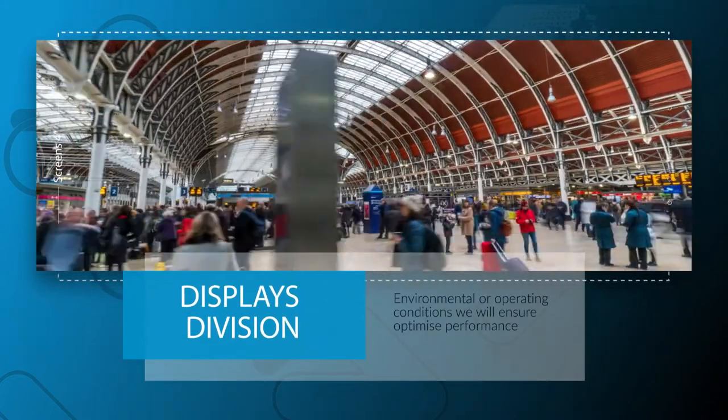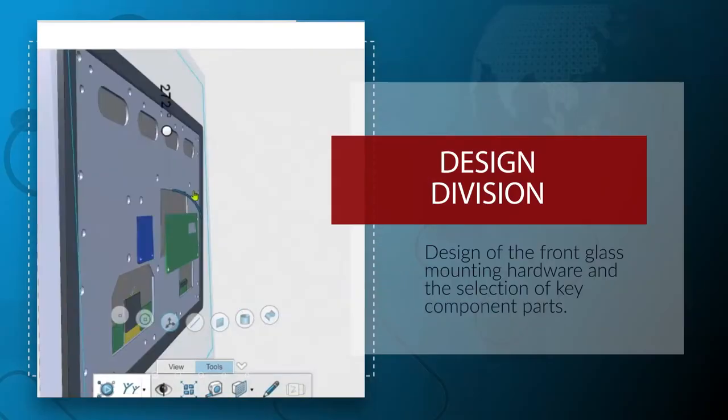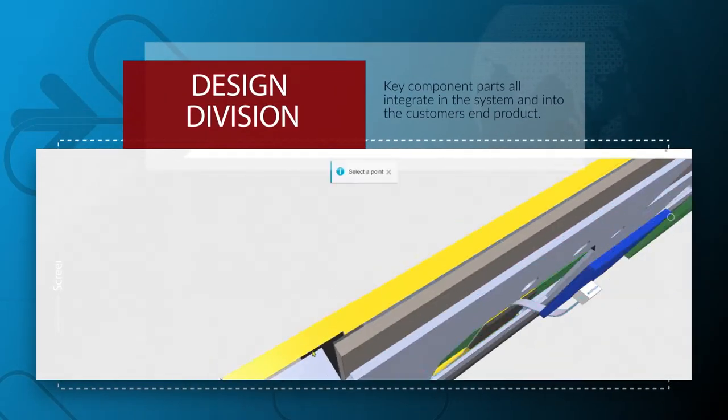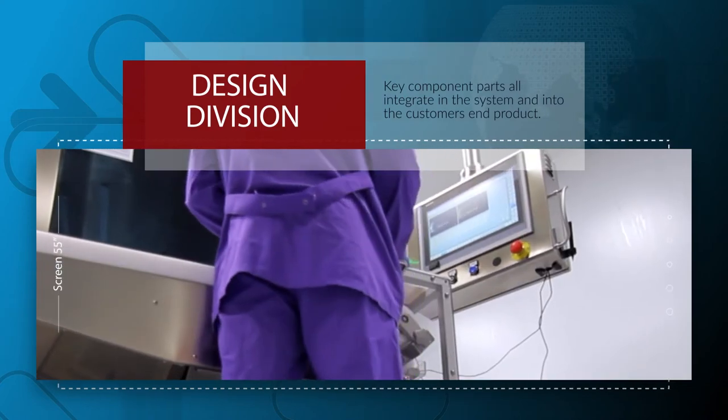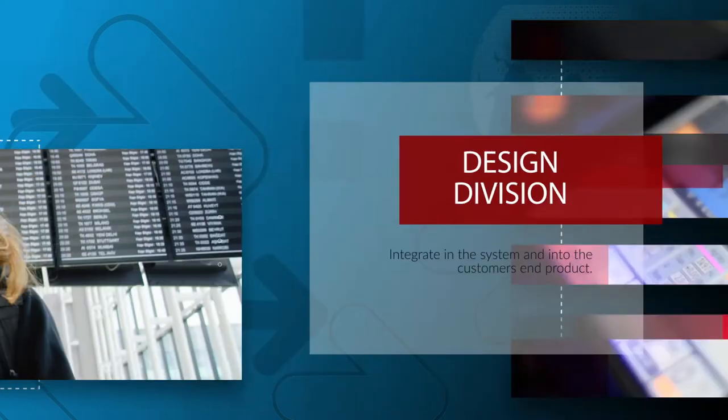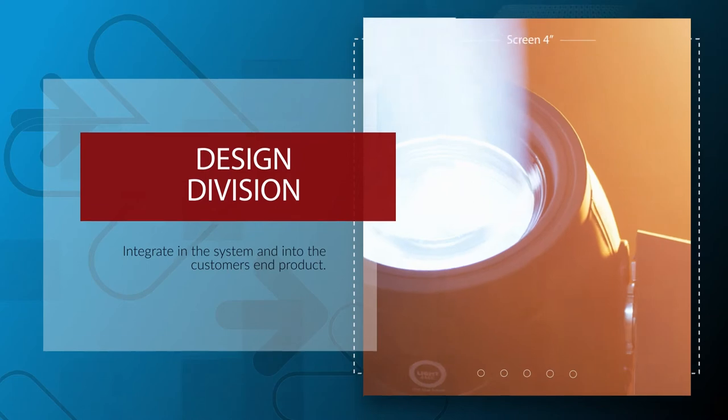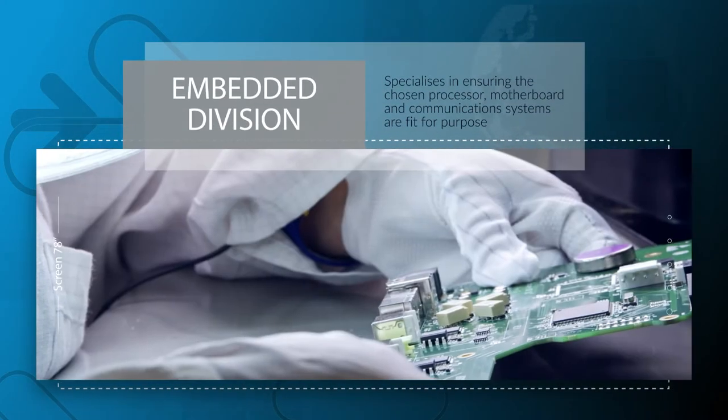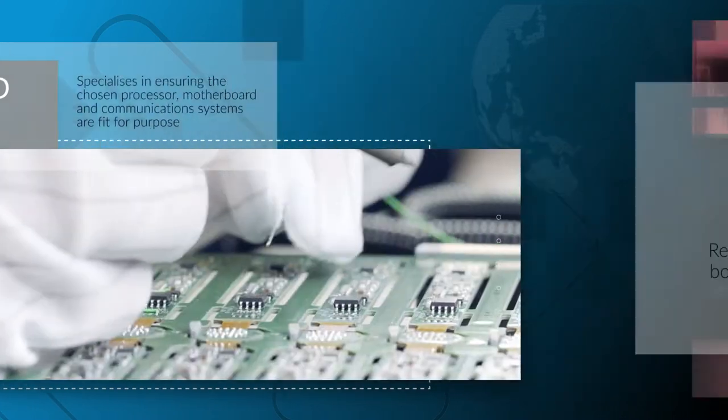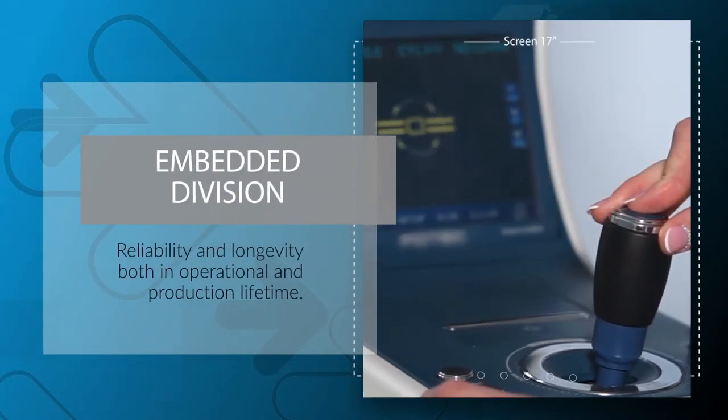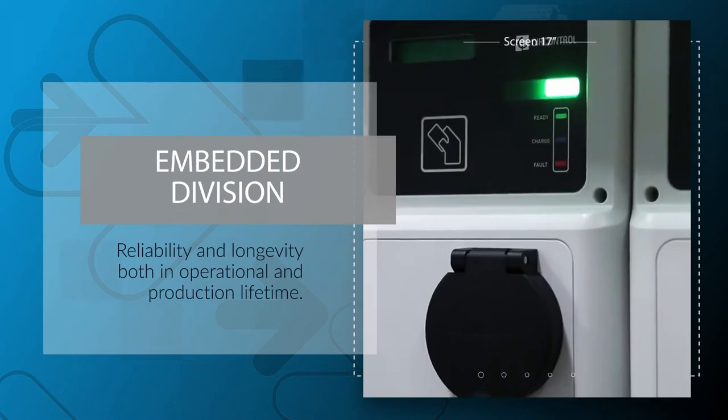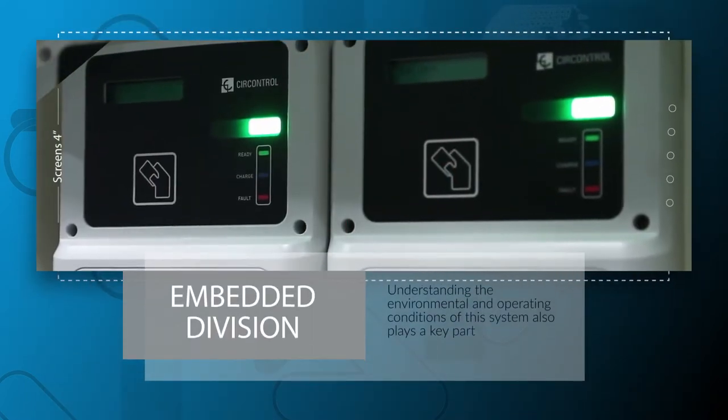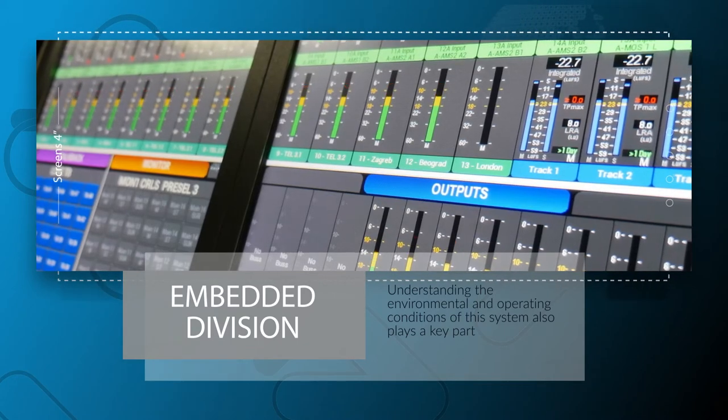Our divisions work together to ensure the design of the front glass, mounting hardware, and the selection of key component parts all integrate in the system and into the customer's end product. Every system has a heart that our embedded division specializes in, ensuring the chosen processor, motherboard, and communication systems are fit for purpose to provide the required performance, reliability, and longevity both in operational and production lifetime.